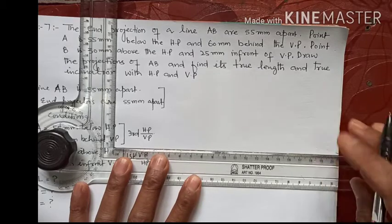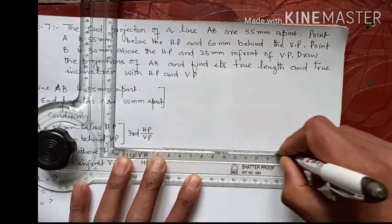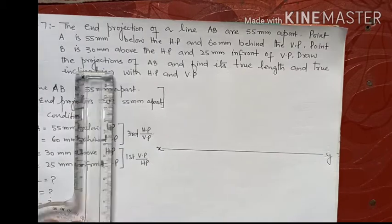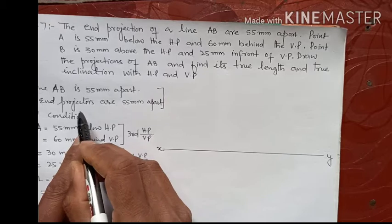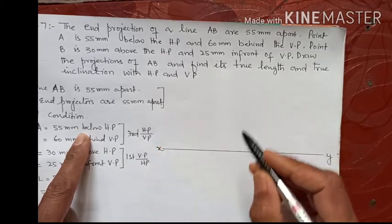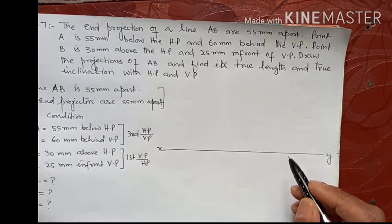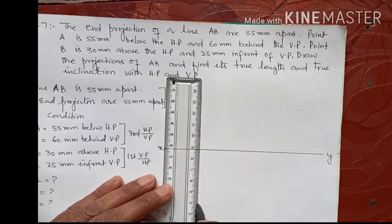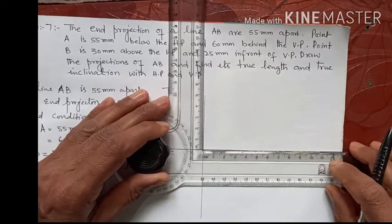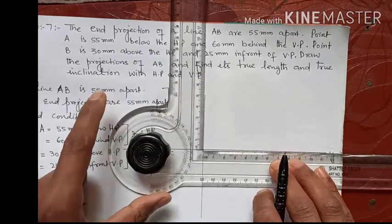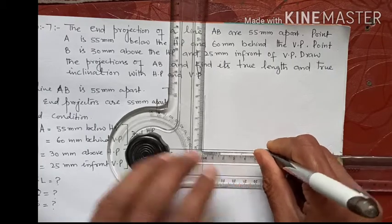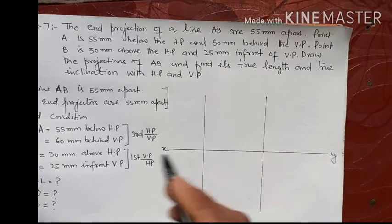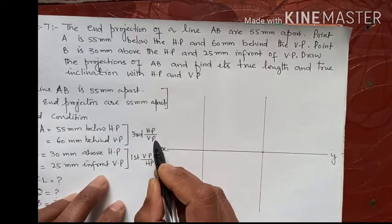We will start by drawing the XY reference line. Now the first condition given is that the end projectors are 55 mm apart. I will draw a perpendicular line and mark a point, then measure 55 mm to place another projector line for the other end.